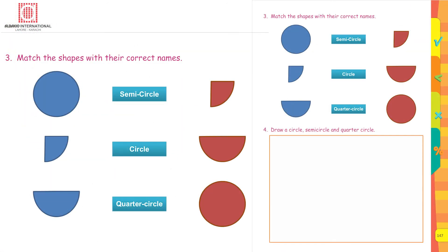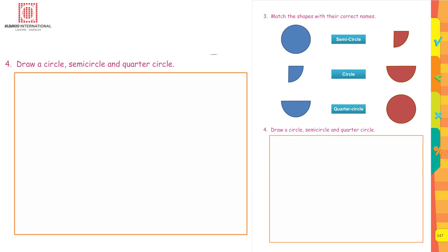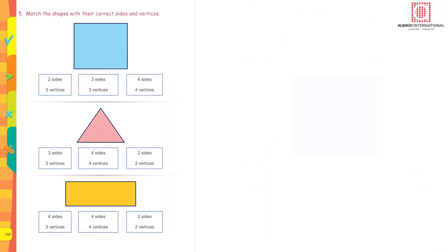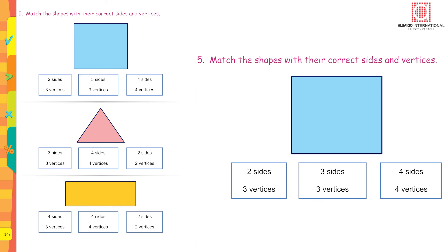Match the shapes with the correct names: semicircle, circle, quarter circle. Now do it on your own — I'm sure you are going to get it correct. In question number 4, draw a circle, a semicircle, and a quarter circle.